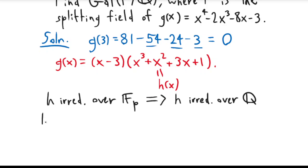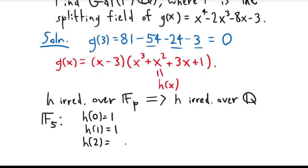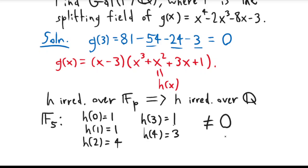The finite field we're going to choose is F₅. In F₅ you can check that h doesn't have any roots: h(0) = 1, h(1) = 1 + 1 + 3 + 1 = 1 in F₅, h(2) = 4, h(3) = 1 in F₅, and h(4) = 3 in F₅. None of these are equal to 0, and since h(x) is a cubic, that shows it's irreducible in F₅.